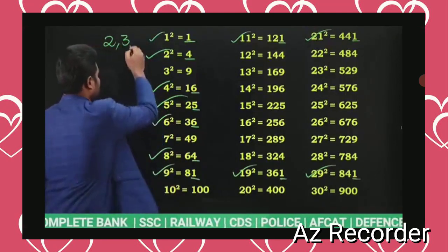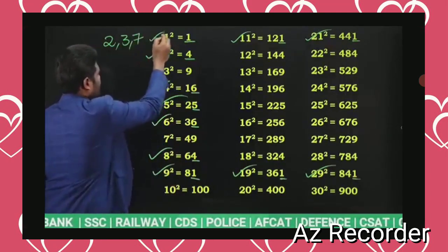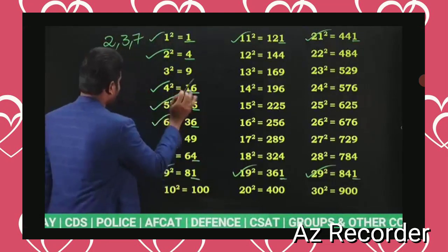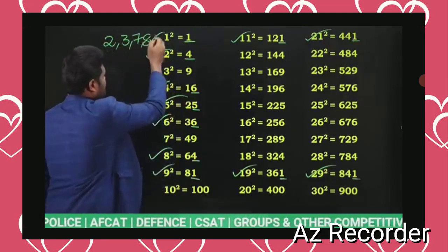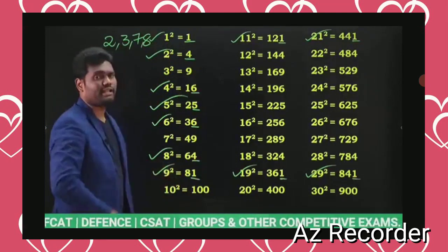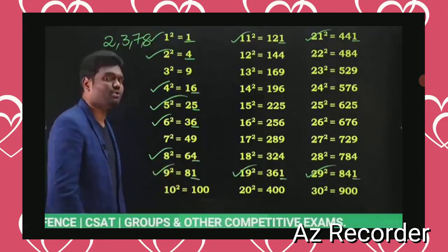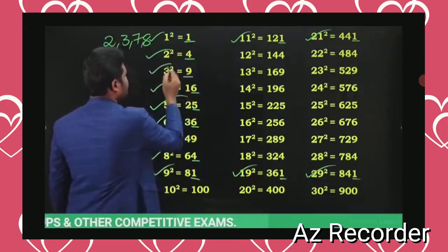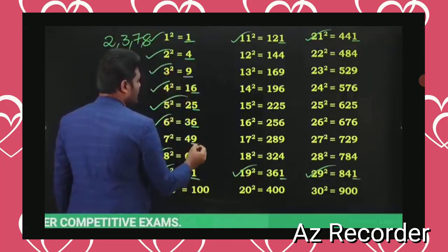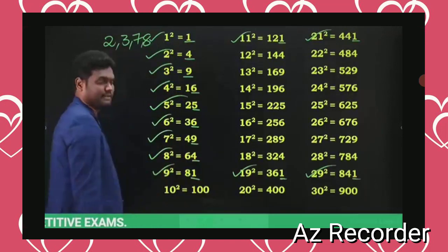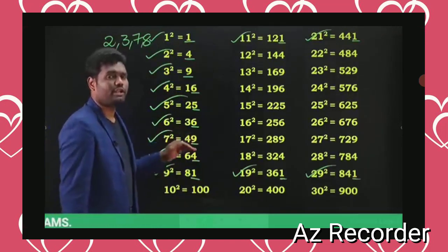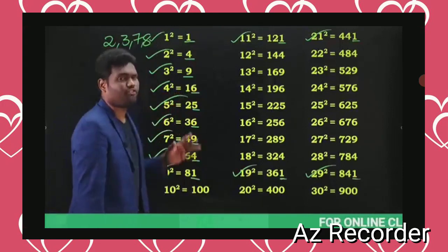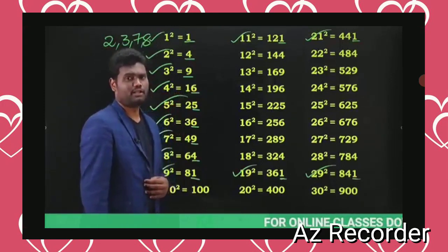You will not get 7 as the last digit of a perfect square — you can verify this. Similarly, you will not get 8 as the last digit either. For 9 as the last digit, you get it when the number ends in 3, and also when it ends in 7. So 9 appears at 3 and 7 — this is an important pattern to observe.